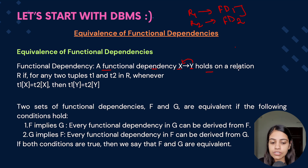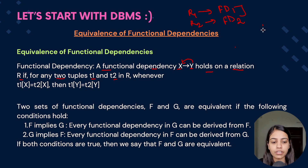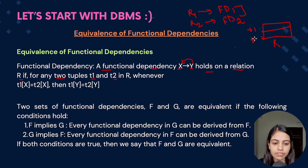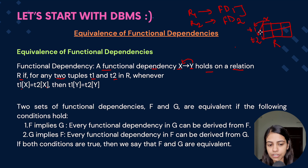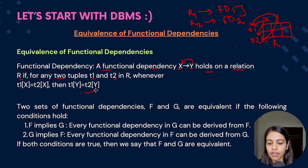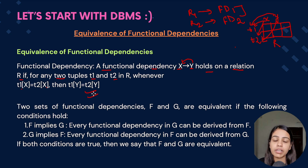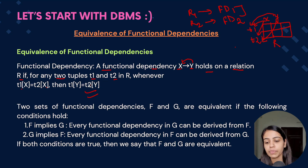A functional dependency X determines Y, where X is the determinant and Y is the dependent, holds on a relation R if for any two tuples T1 and T2 in R: if T1[X] = T2[X], then T1[Y] = T2[Y]. Functional dependency helps us know the dependencies among different attributes of a table — what is the determinant, what is the dependent, and how it is determined.